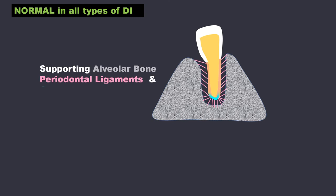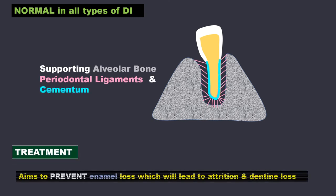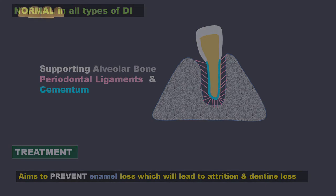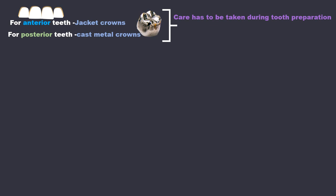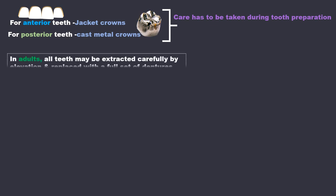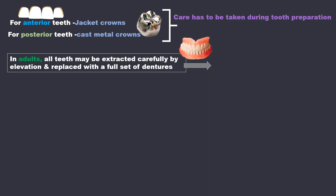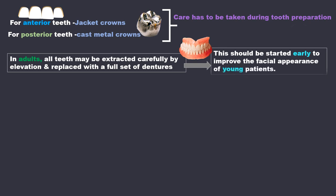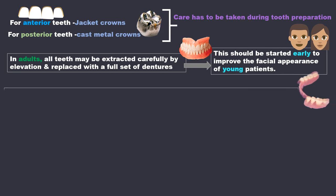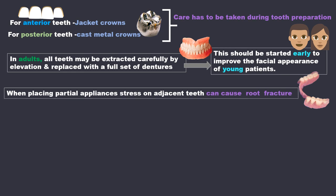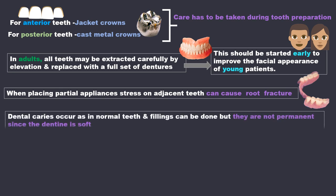Other normal features in all types of DI are the supporting alveolar bone, the periodontal ligaments, and cementum. Treatment aims to prevent enamel loss, which would lead to attrition and dentine loss. For anterior teeth, jacket crowns are used; for posterior teeth, cast metal crowns can be made. Care has to be taken during tooth preparation. In adults, all teeth may be extracted carefully by elevation and replaced with a full set of dentures. This should be started early to improve the facial appearance of young patients. These teeth are chipped off, broken, or with root fractures and cannot be used for chewing food effectively. When placing partial dentures, stress on adjacent teeth can cause root fractures, so care is needed. Dental caries in DI occurs as in normal teeth and fillings can be done, but they are not permanent since the dentine is soft.